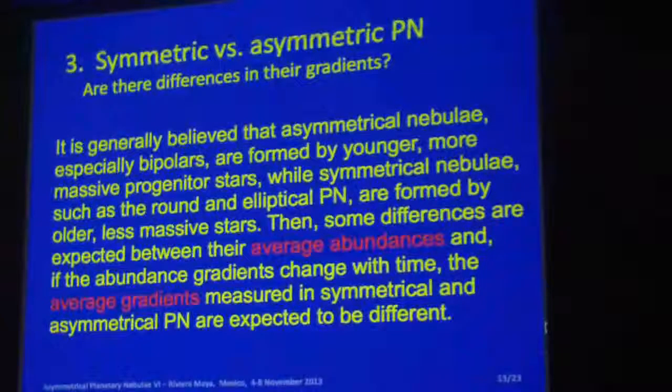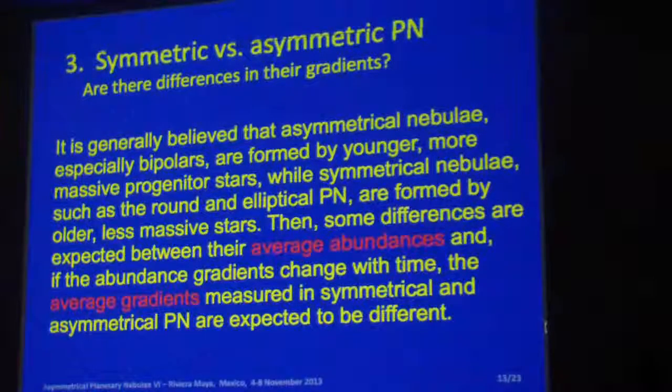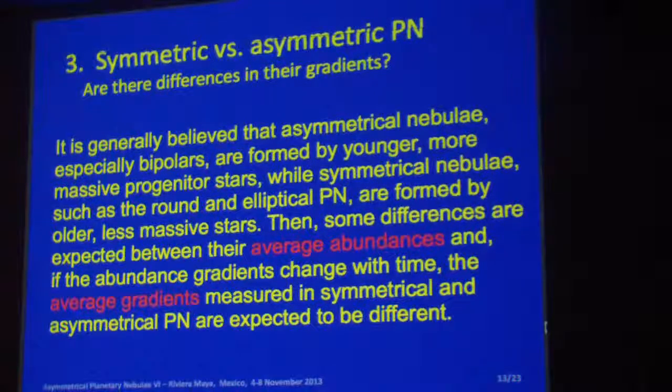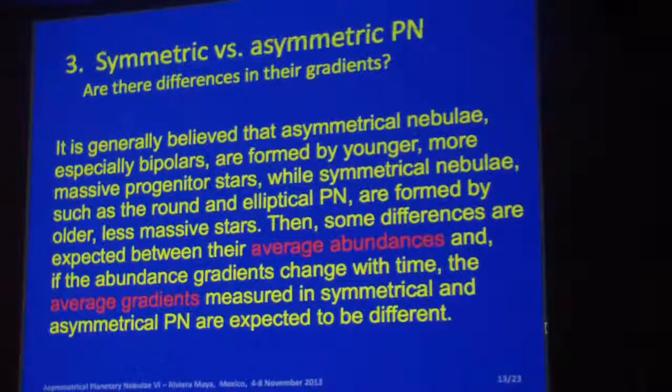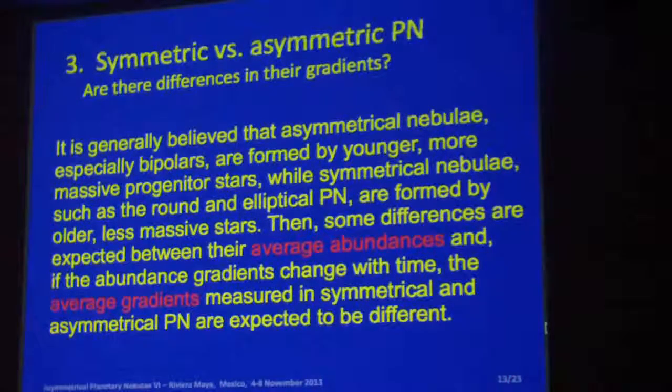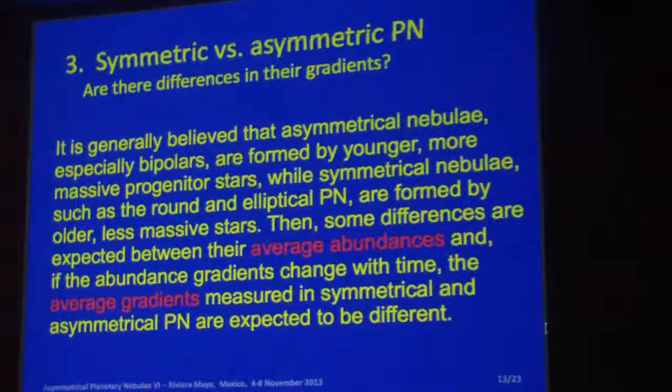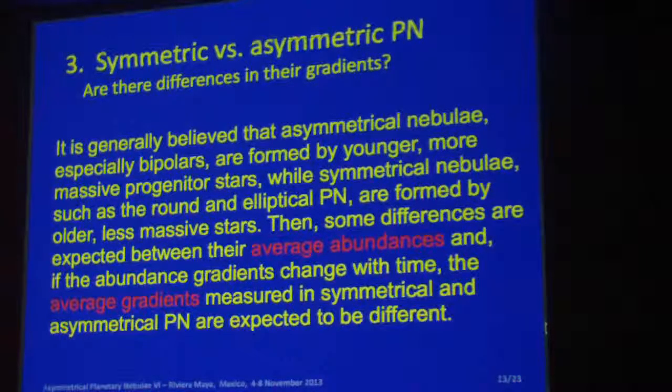Now the main topic here: what can we do about the morphology? It is generally believed that the DUPLEX bipolar are younger than the round or elliptical nebulae. If that's true, and most people believe that's true, then this represents a change in time. So we should, in principle, see some differences between gradients from bipolars and gradients from non-bipolars.